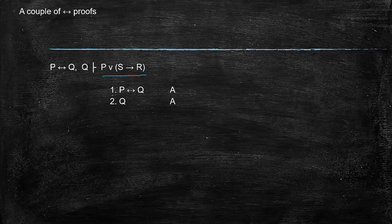Well, P if and only if Q goes to if Q then P by biconditional elimination. Then you can use conditional elimination to get P and then add P or S then R. This is something that takes a little getting used to, the or introduction with the conclusion. It really feels like you're getting a lot for free here. But this just is how or introduction works.